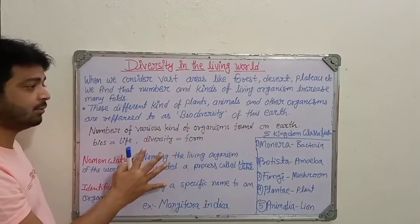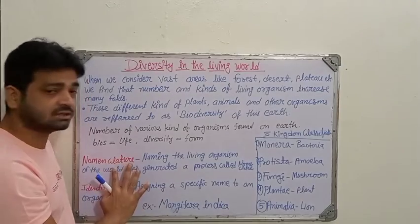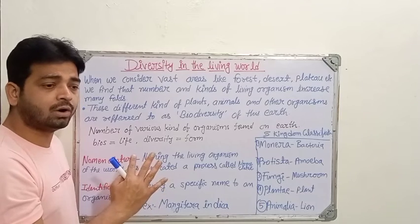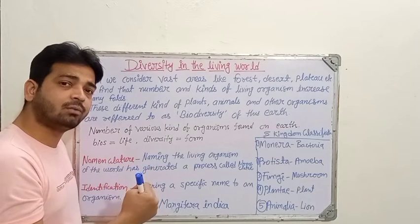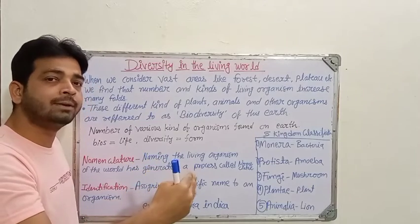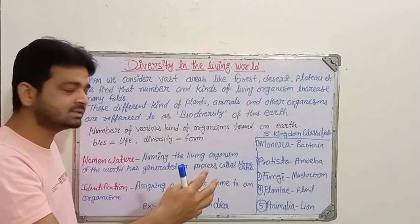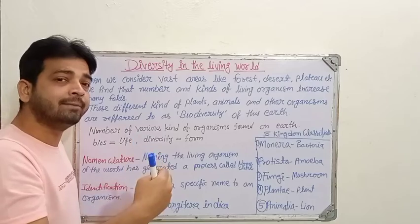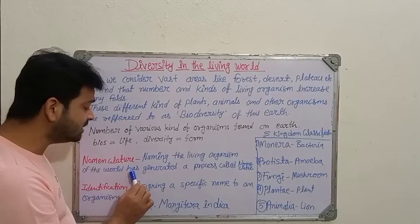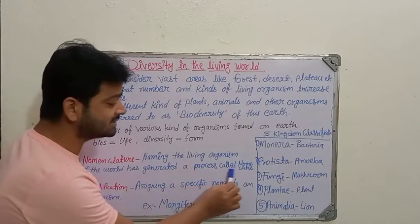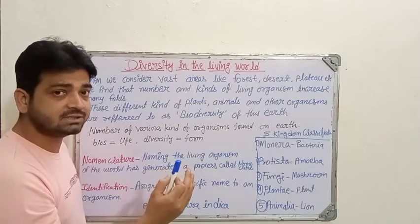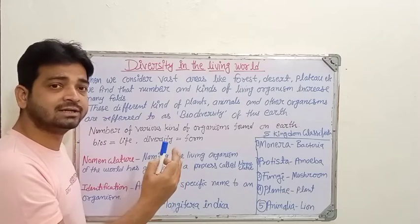An important concept here is nomenclature — how we are going to give names to organisms. For example, when a new coronavirus comes up, we first need to understand its anatomy and physiology and, based on its characteristics, classify it into a particular field. This process of naming living organisms of the world is called nomenclature, where we assign a genus and a species based on its characteristics.